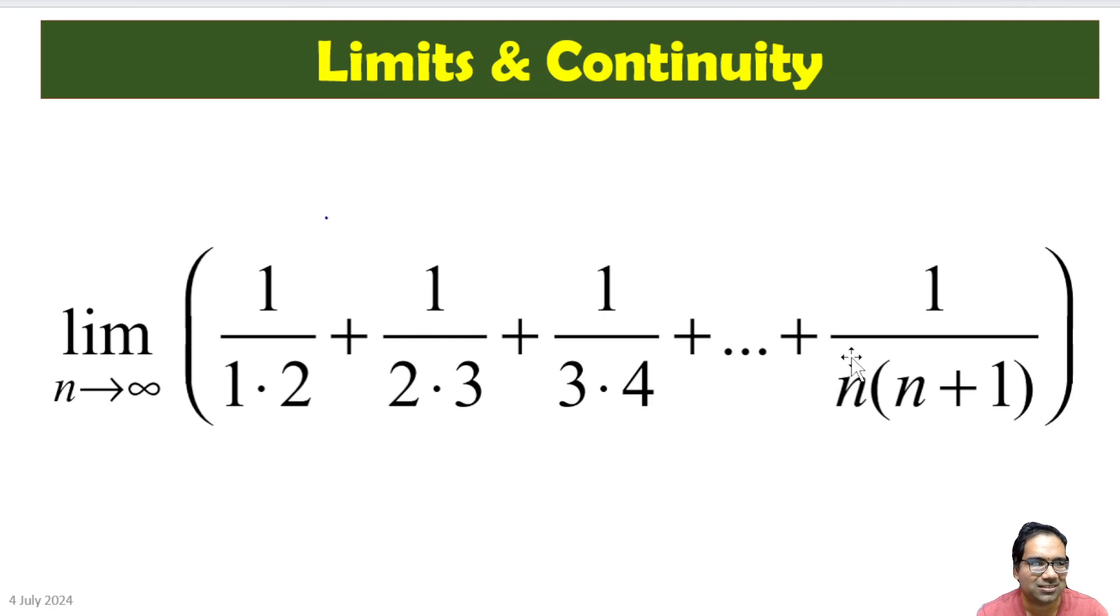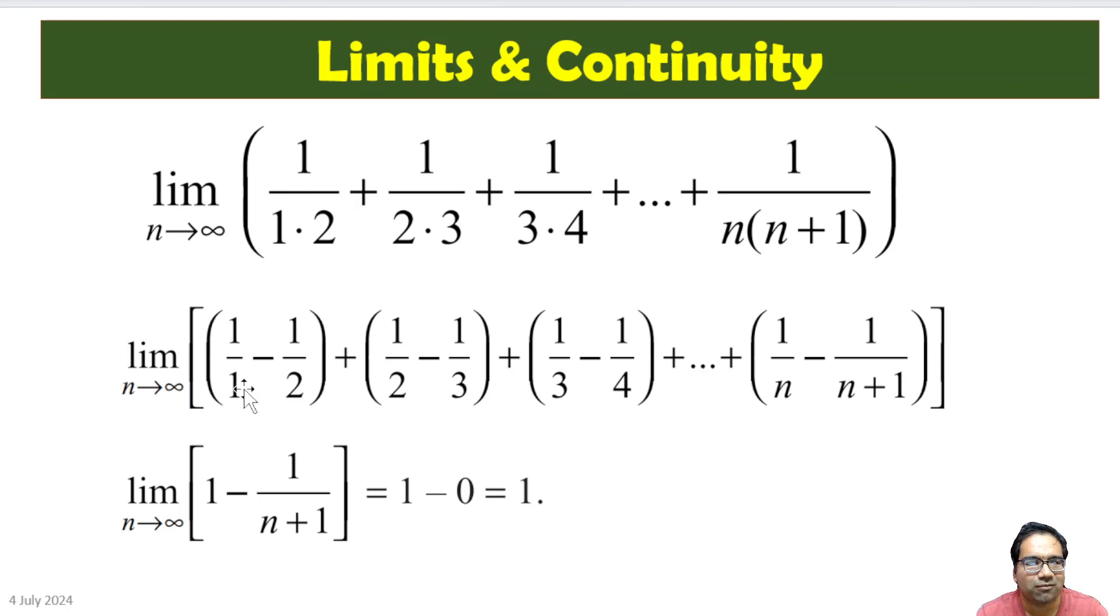This is called a telescoping series. Basically we can break this: 1/(1·2) we can break it as 1/1 - 1/2, which is 1 - 1/2.